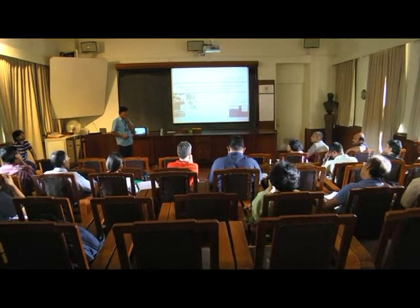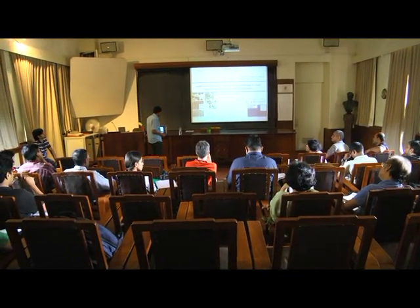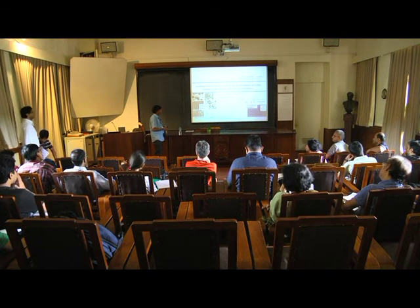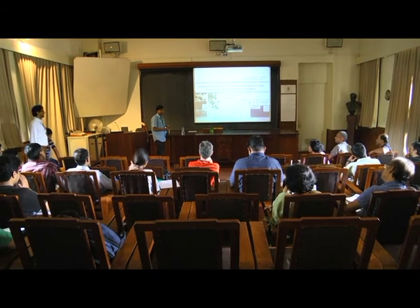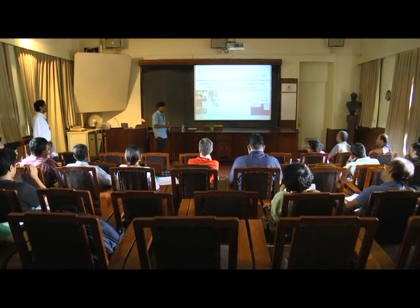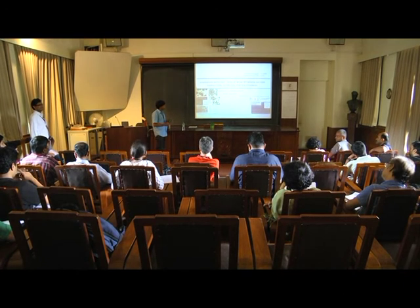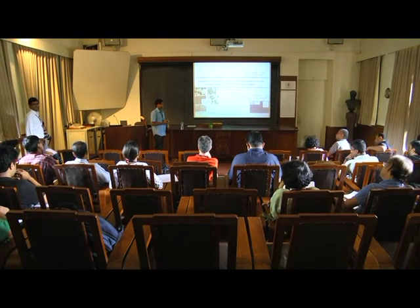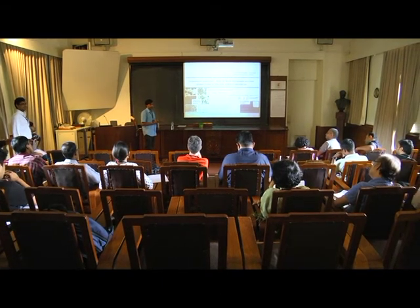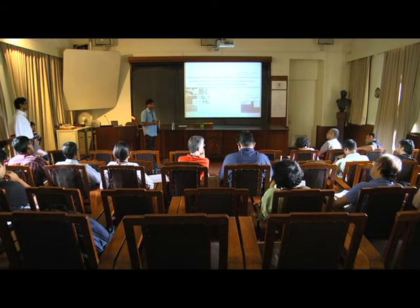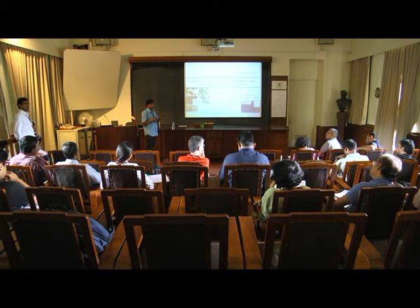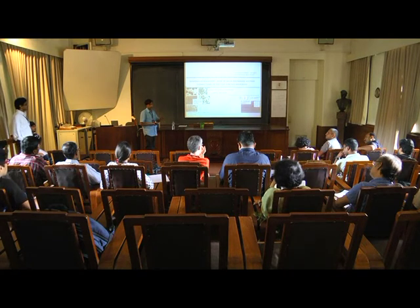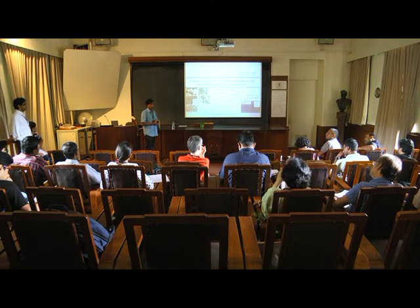Regarding the Jeffrey orbit period: it was calculated by Jeffrey around 93 years ago. It scales with aspect ratio — proportional to aspect ratio for thin prolate spheroids and inversely proportional for thin oblate spheroids. So the more elongated or the flatter the particle, the longer it takes to complete a full rotation.